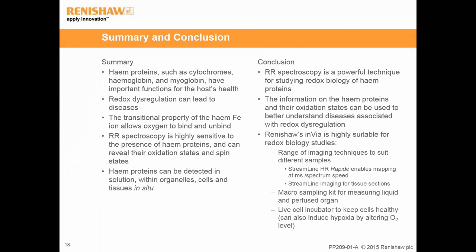Those were all the examples I wanted to give in this presentation. To summarise: heme proteins such as cytochrome, hemoglobin and myoglobin have important functions for the host's health. Redox dysregulation can lead to a variety of diseases. Information related to heme protein functions — such as the redox state of heme — is important for understanding health regulation and disease pathogenesis. Resonance Raman spectroscopy is the ideal tool for redox biology studies because it is highly sensitive to heme proteins and can reveal their oxidation state and spin state. It can be applied in solution, in organelles, cells and tissues in situ, allowing information to be gained from an environment as close to physiological conditions as possible.